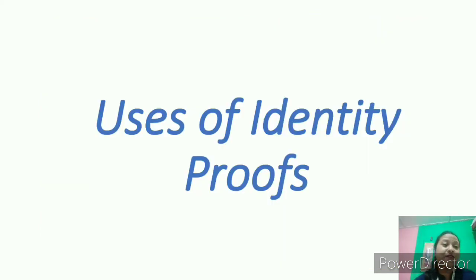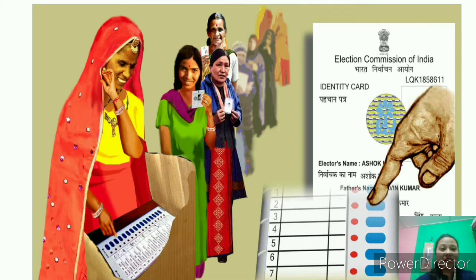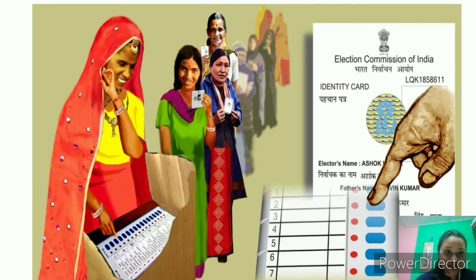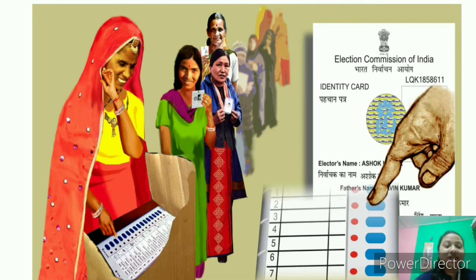Let us know about the various uses of our identity proofs. Our voter ID card is very important when we cast our vote in elections. In the general elections held every five years, we need our voter ID cards to cast our vote. Voter ID cards are given to citizens of age 18 years or above — not below 18 years. So once you all are 18 years, you will definitely be getting this voter ID card issued by the Government of India.